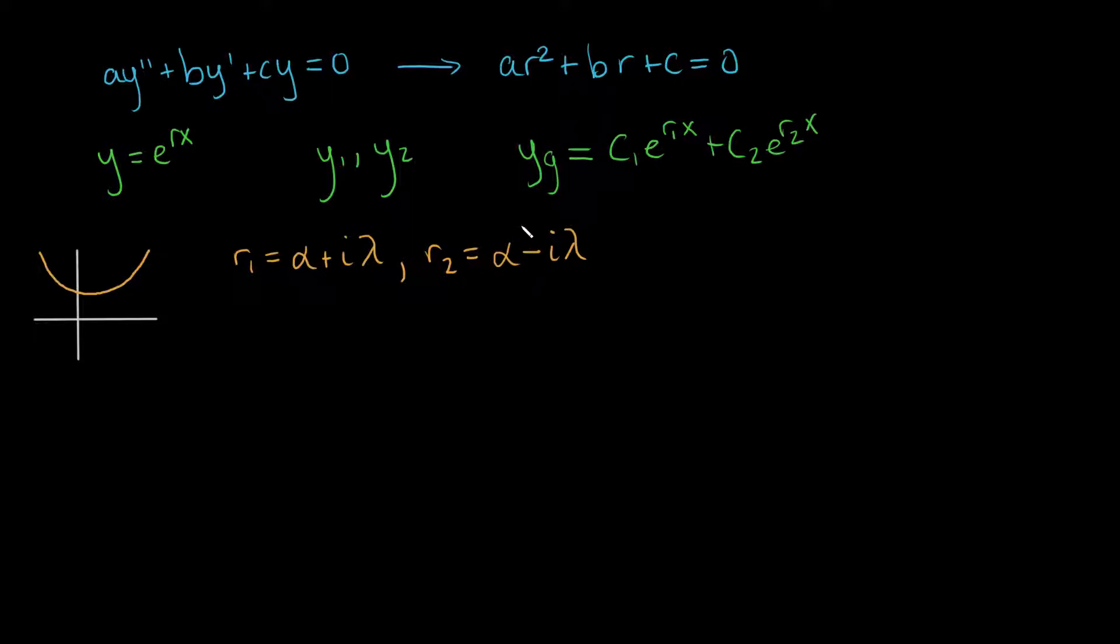Given these two roots, if we just plug them in into our general solution, we'll get a bit of a wacky result. So we get, if we just plug and chug, that the general solution equals some constant times e to the alpha plus i beta times x, plus c2e to the alpha minus i beta times x. Let's just be consistent here with alpha and beta.